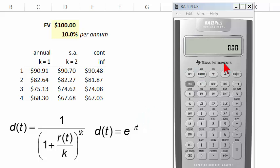Hi, this is David. I wanted to show how to use the Texas Instruments BA2 Plus to calculate the present value of future cash flow. In this case, I'm going to assume $100 received in the future, and the discount rate is 10% per annum.